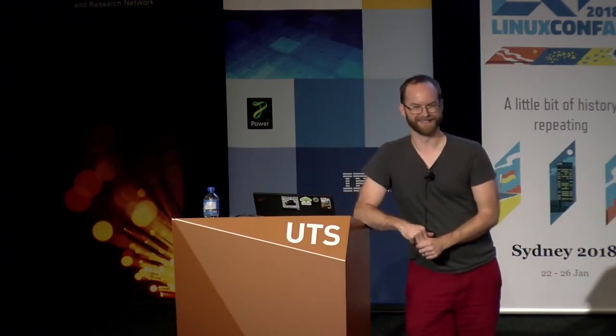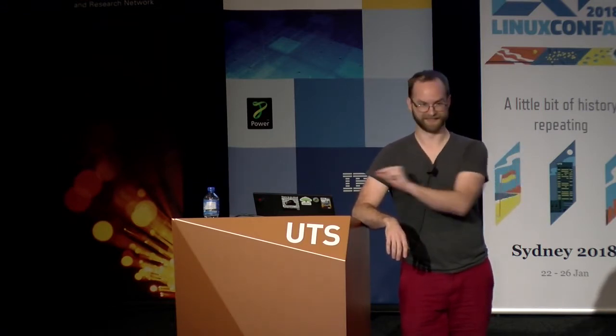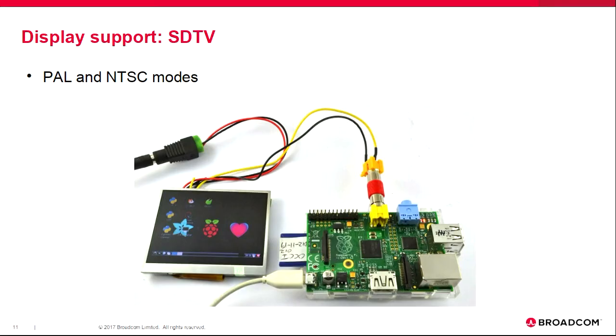For power management, the closed source firmware, when asked to turn off the screen, starts scanning out black — so the monitor still gets pixels, they just happen to be black. I actually ask the monitor to turn itself off and power down the HDMI core, aiming for a lower-power implementation. If you're not doing HDMI, you can do composite video out — on older Raspberry Pis there's an RCA jack, on newer ones there's a TRRS microphone-style jack — though PAL and NTSC are terrible for reading text.